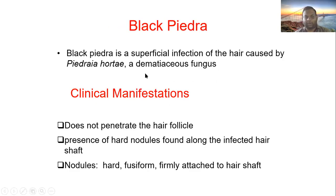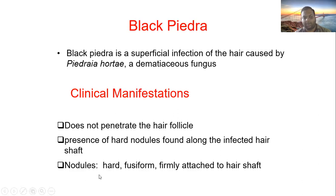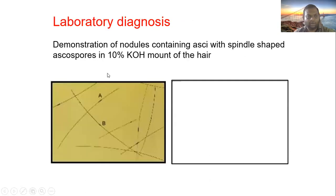Black Piedra is another cosmetic problem — a superficial infection of the hair caused by Piedraia hortae. It does not penetrate the hair follicle. Clinically, thousands of hard, dark nodules are found along the infected hair shaft. These nodules are firmly attached to the hair shaft. Laboratory diagnosis involves demonstration of the nodule containing asci in a KOH preparation.